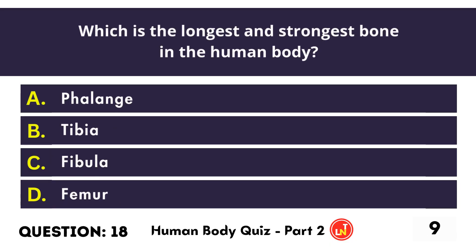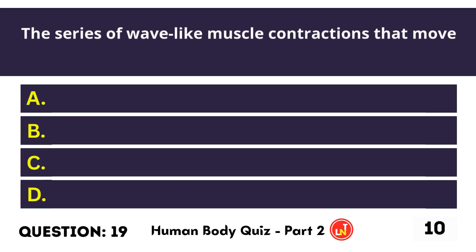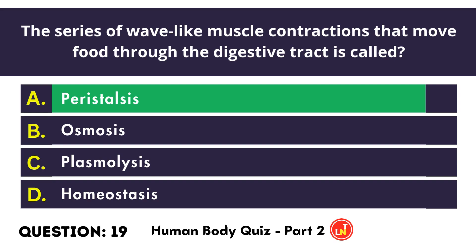Which is the longest and strongest bone in the human body? Femur. The series of wave-like muscle contractions that move food through the digestive tract is called peristalsis.